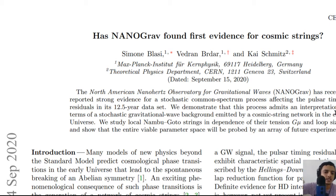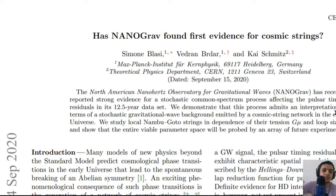In string theory, we have Nambu-Goto strings in terms of their tension G-mu and loop size alpha, and the study shows that the entire viable parameter space can be probed by an array of future experiments. They constructed a model to explore even more settings and types of experiments that can be done using this data set.